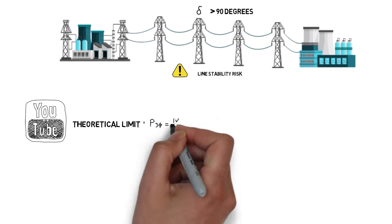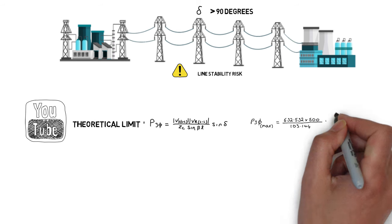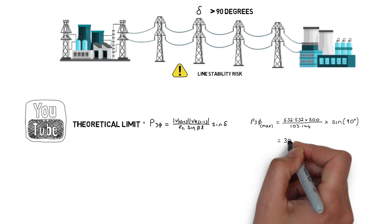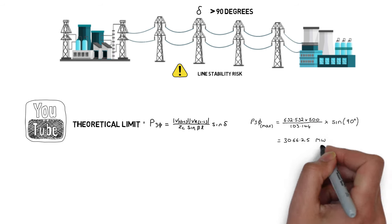The theoretical limit of the transmission line is equal to 3066.25 megawatts.